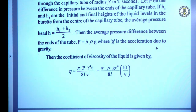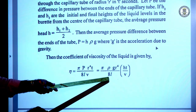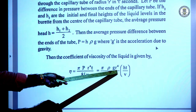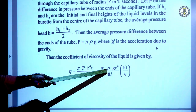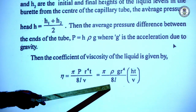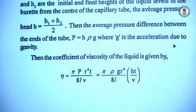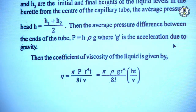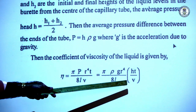In that equation, for a given capillary tube the length L is a constant and the radius R is a constant, and for the given liquid ρ is a constant. So π·ρ·g·R⁴ / (8·L) is a constant. The variable quantity is H·T/V, where H is the average pressure head, T is the time of flow, and V is a certain volume.